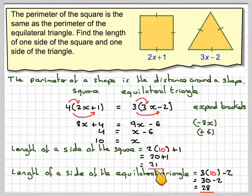So the length of the side of the square is 21, and the length of the side of the equilateral triangle is 28.